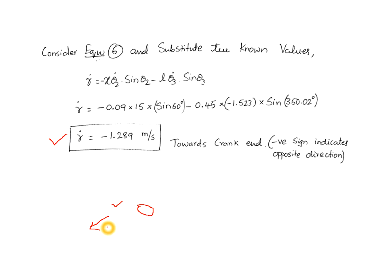We have now found all three velocity unknowns: theta 3 equals 350.02 degrees, theta3-dot equals −1.523 rad/s, and r-dot equals −1.289 m/s. The negative sign for r-dot indicates the piston moves opposite to the assumed direction, that is, toward the crank end.